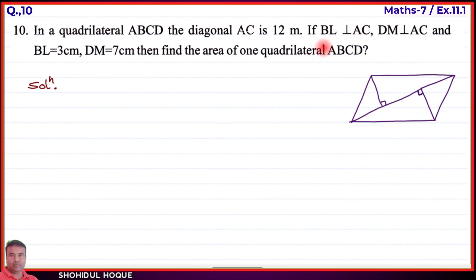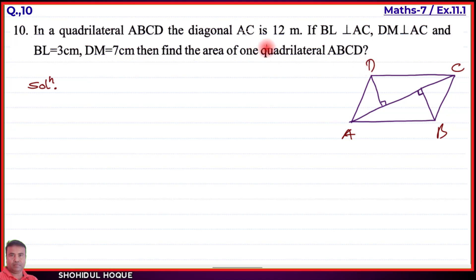For quadrilateral ABCD, we draw the figure. ABCD is a quadrilateral with vertices A, B, C, D. We draw the diagonal AC. Then we mark BL perpendicular to AC from vertex B, and DM perpendicular to AC from vertex D.